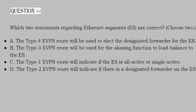Next question: Which two statements regarding Ethernet segments (ES) are correct? Choose two options. Option A: The type 4 EVPN route will be used to elect the designated forwarder for the ES. Option B: The type 3 EVPN route will be used for aliasing function to load balance to the ES. Option C: The type 1 EVPN route will indicate if the ES is all-active or single-active. Option D: The type 2 EVPN route will indicate if there is a designated forwarder on the ES. The correct answer is option A and option C.